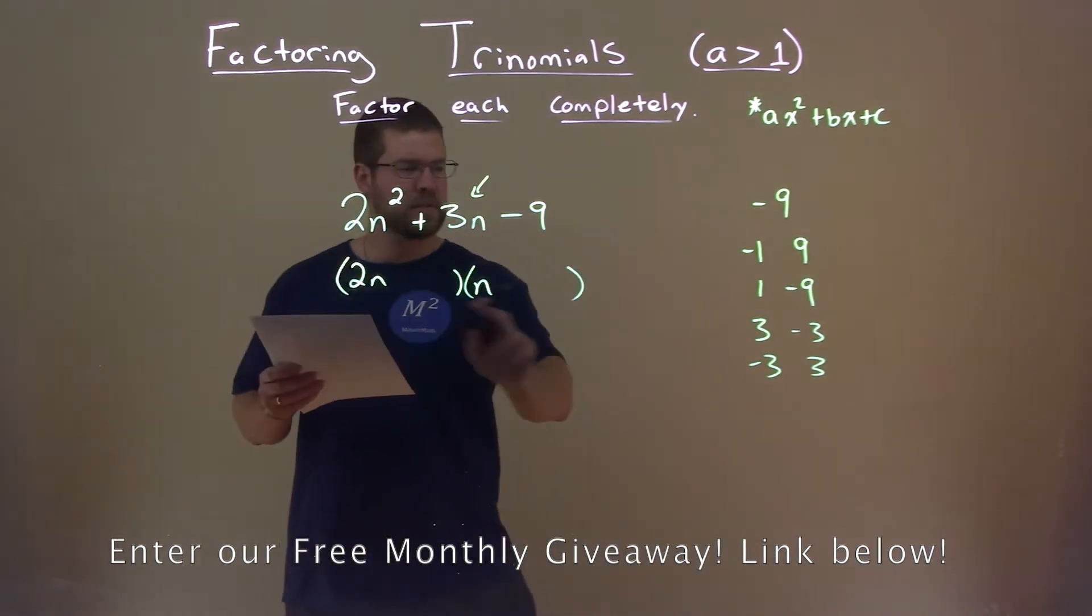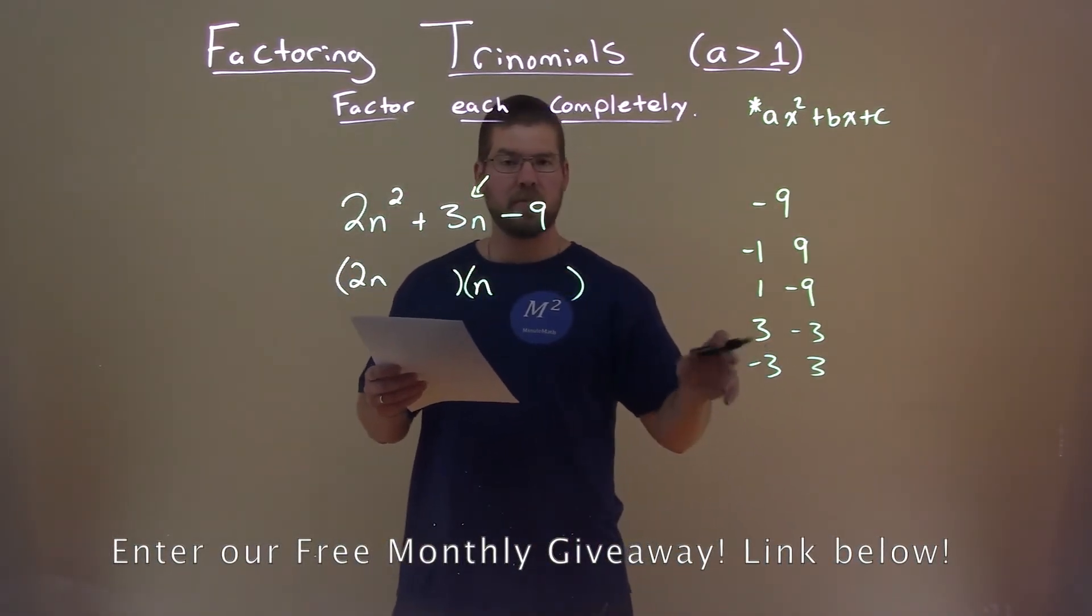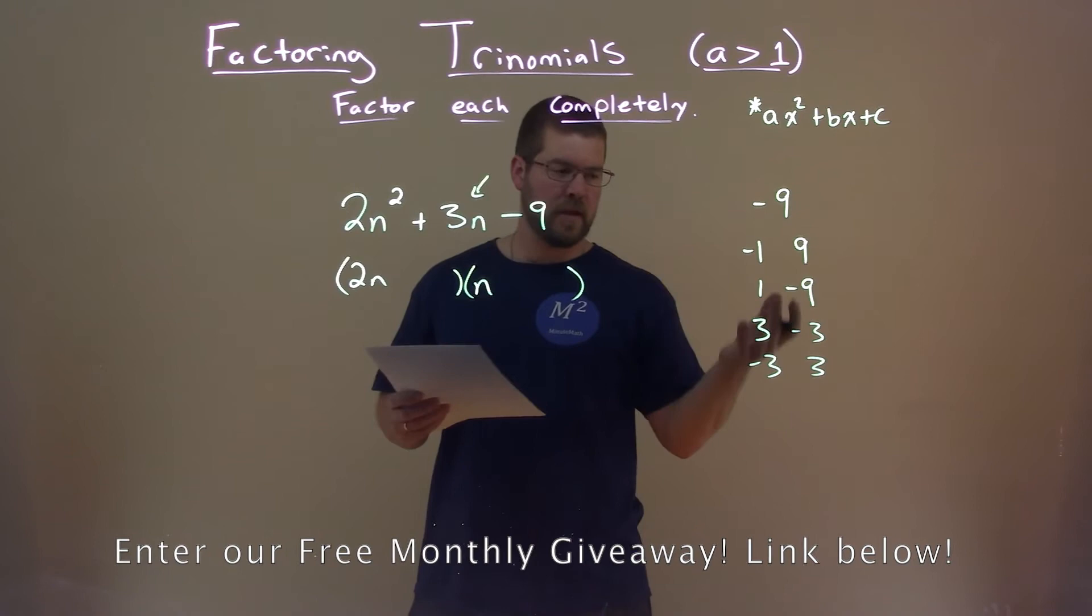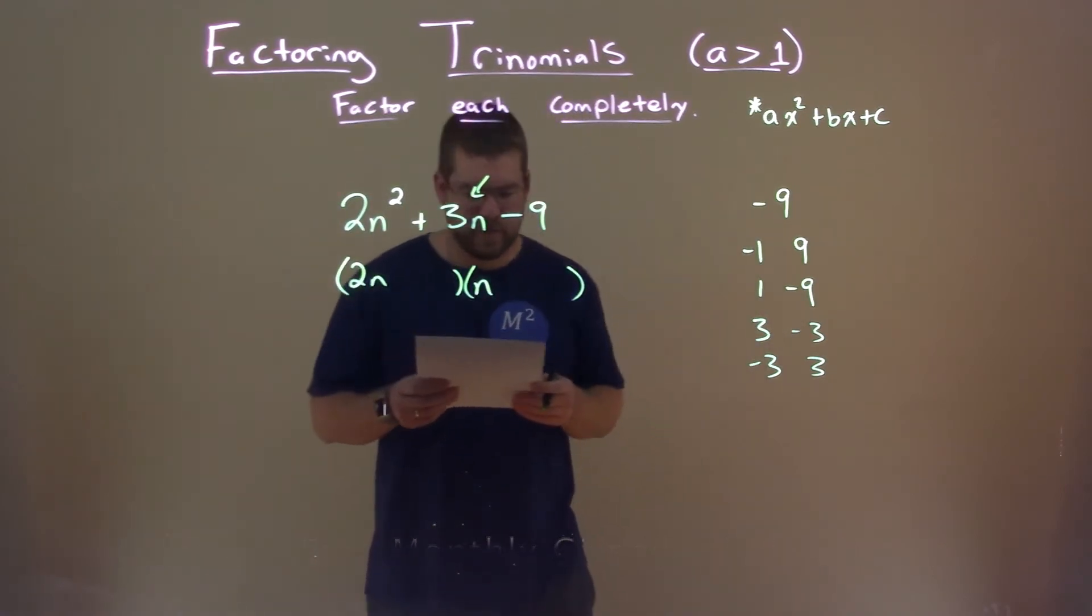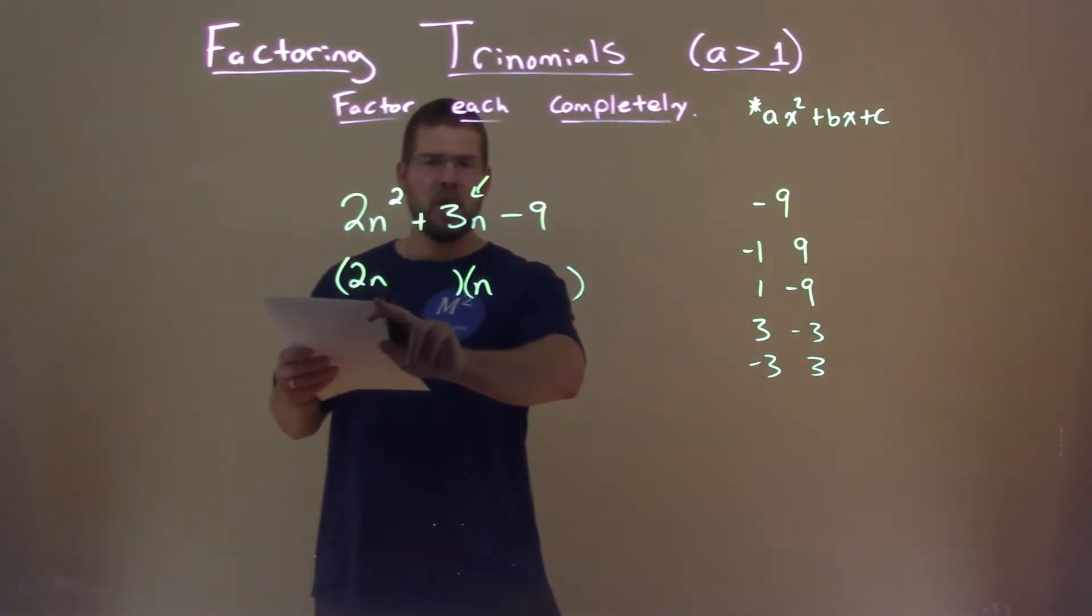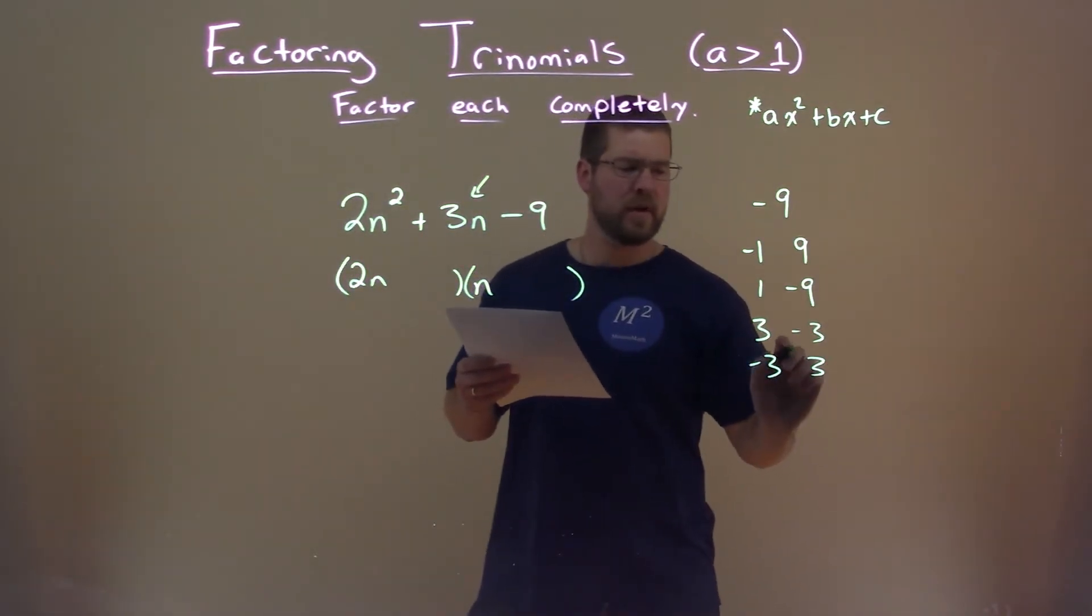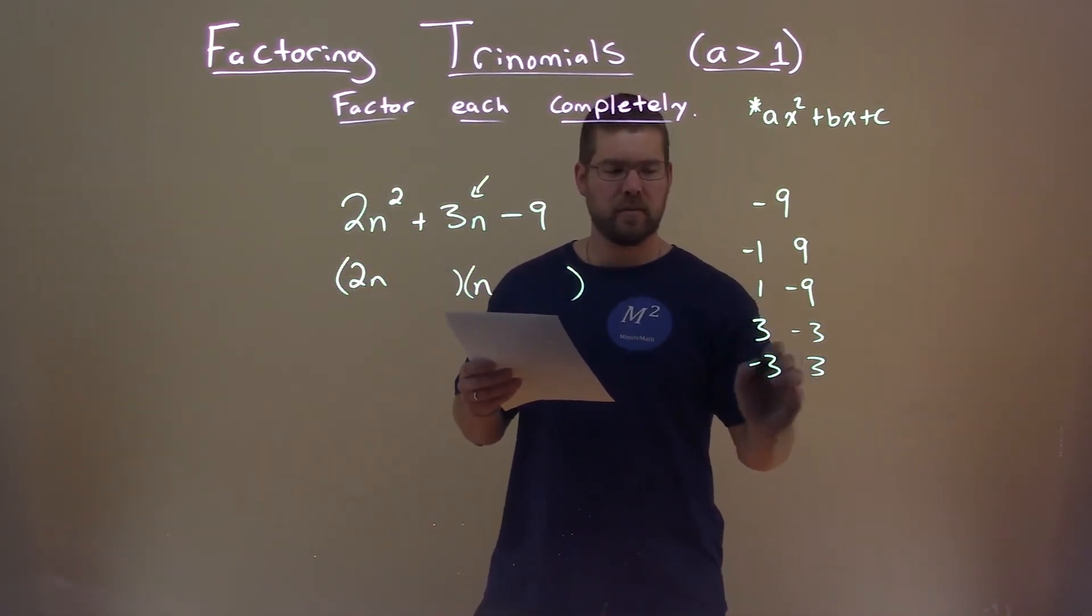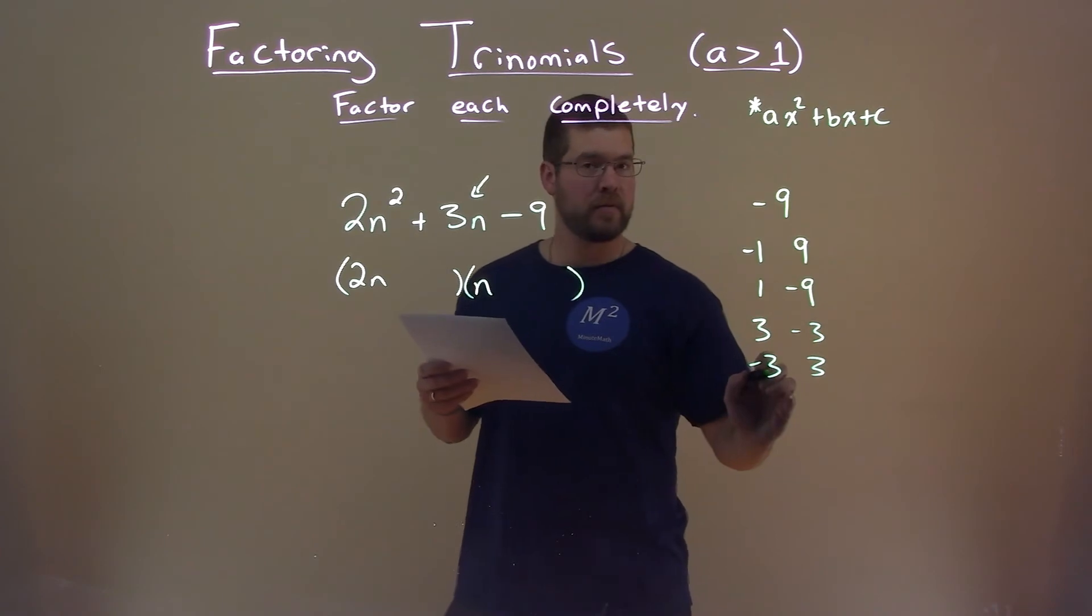All right, so 2 times one of these numbers plus the other number gives us a positive 3. All right, well, 2 times 3, right? 2 times 3 is 6. Subtract 3, and we get a positive 3.